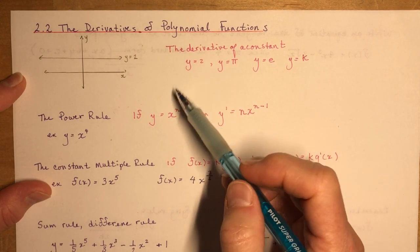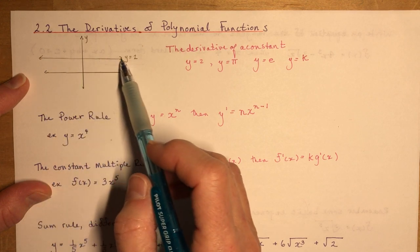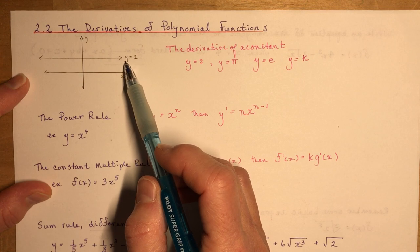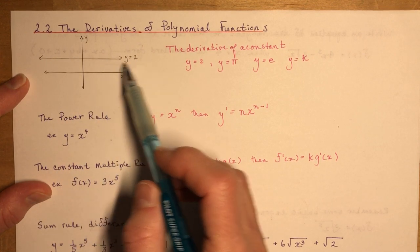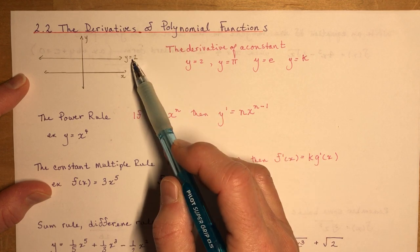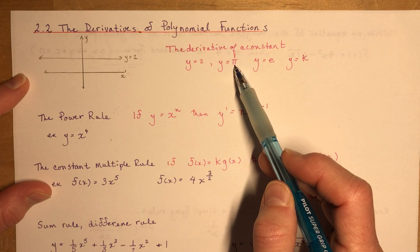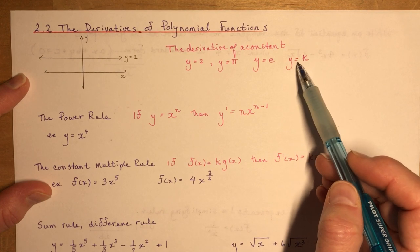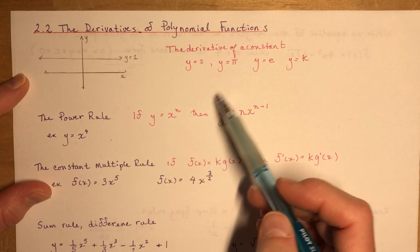We start with the derivative of a constant. In the lesson on curve sketching, I explained why the derivative of a constant is zero — because the slope of a line whose equation equals a constant is zero. So whether it's y = 2, y = π, y = e (which is approximately 2.71828), or y = k where k is just a constant, the slope of all of these is simply zero.